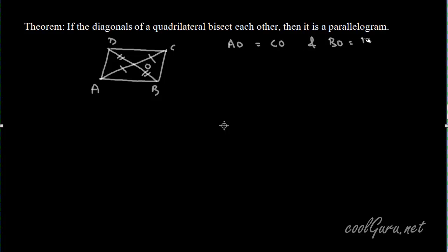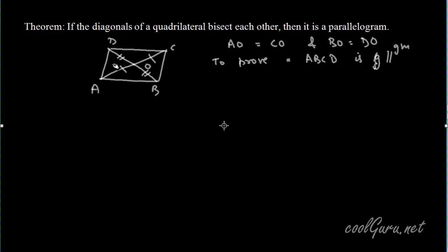We have to prove that figure ABCD is a parallelogram. To prove this, we will consider triangles DOC and BOA and prove that these two triangles are congruent.